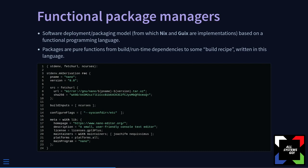Here's an example: the expression for the nano package. At the top you have the three parameters of the function: stdenv, fetchurl, and ncurses. stdenv is the standard environment to build in Nix. fetchurl downloads the source of the nano package, and ncurses is a runtime dependency. The expression has an src field that downloads a very precise version of nano's source, and a recipe to build the executable. You can provide flags or add specific steps during compilation, and there's a meta field containing metadata including the maintainer, license, and compatible platforms.